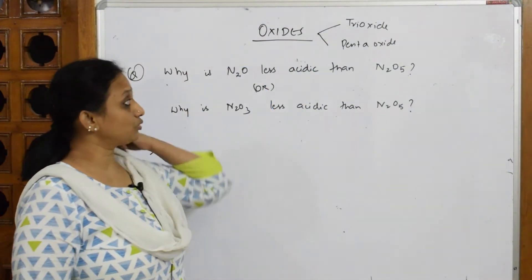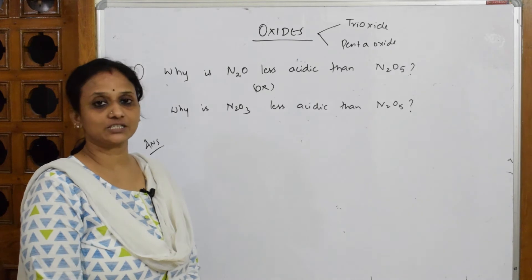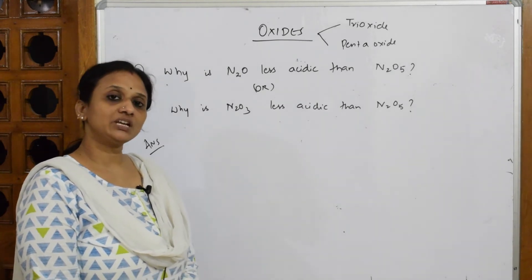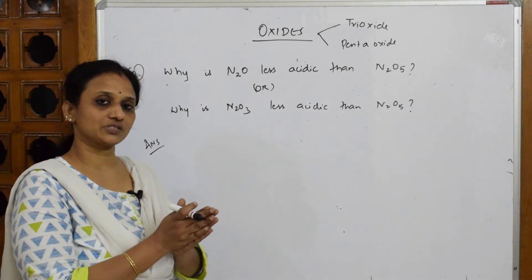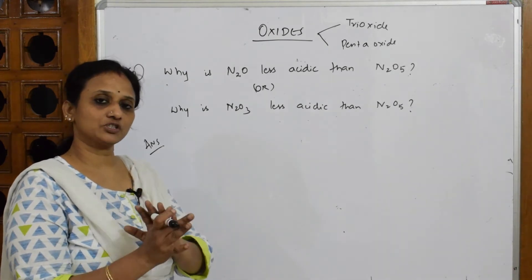Now let's come back and see one more question which is based on acidic nature. So what did I say last time? Whenever they're giving you a combination of oxides like nitrogen oxide, N2O3, or phosphorus oxides or arsenic oxides, bismuth oxides like that, then you have to speak in terms of metallic character.